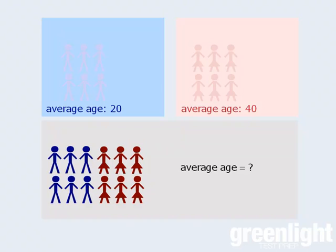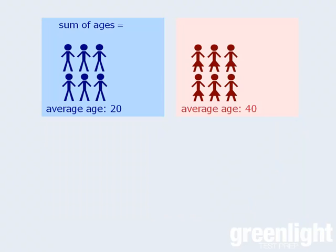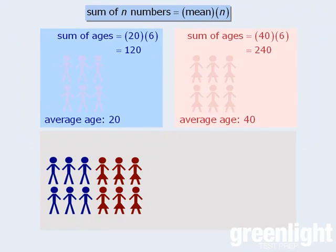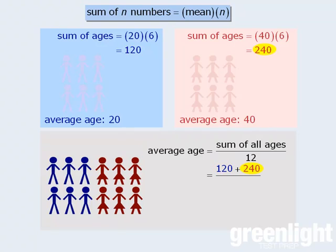If you said 30, you're right. To see why, let's find the sum of the ages of the men and the sum of the ages of the women using the following formula. Since the average age of the men is 20 and there are 6 men altogether, the sum of their ages will be 20 times 6, which is 120. Applying the same formula to the women, the sum of their ages is 240. The average age of these 12 people will be the sum of all 12 ages divided by 12 — 120 plus 240, divided by 12 — which gives an average of 30. Notice that the average age of the combined population equals the average of the average ages of the two original groups.